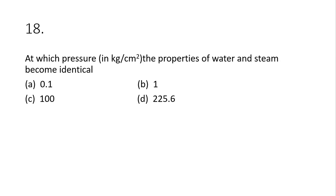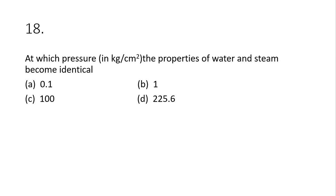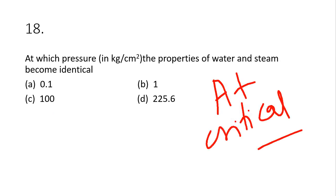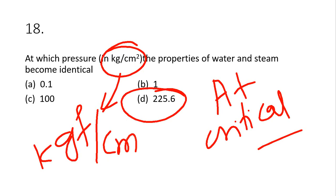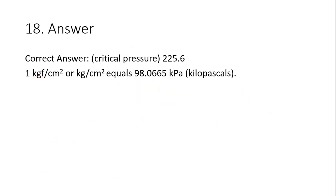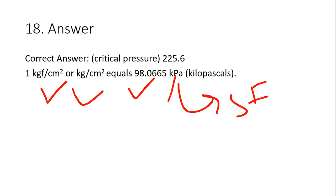Question 18: at which pressure do the properties of water and steam become identical? That is the critical pressure. For water, the critical pressure is 225.6 kgf/cm². Note that 1 kgf/cm² = 98.0665 kPa, and pressure in SI units is expressed in pascals, which is newtons per meter squared.